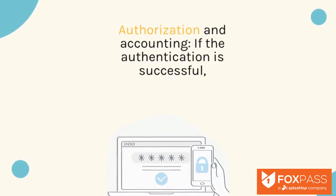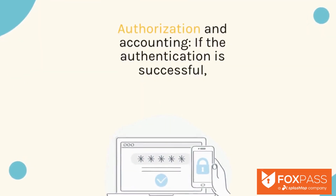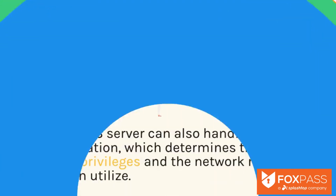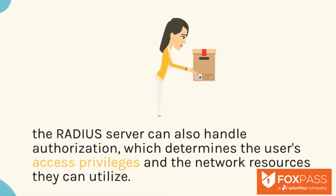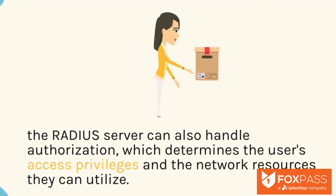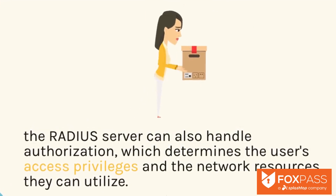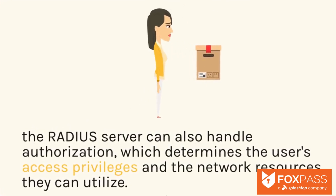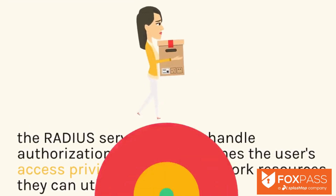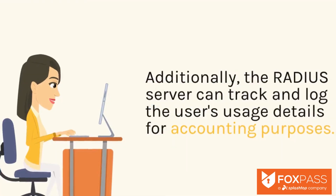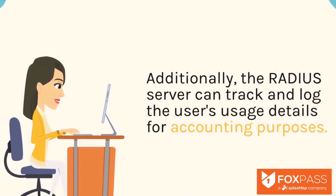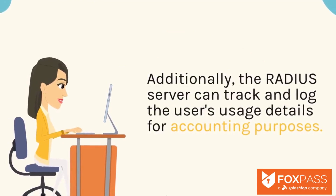Step 5: Authorization and accounting. If the authentication is successful, the RADIUS server can also handle authorization, which determines the user's access privileges and the network resources they can utilize. Additionally, the RADIUS server can track and log the user's usage details for accounting purposes.